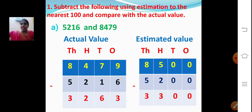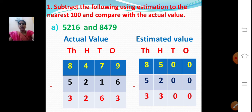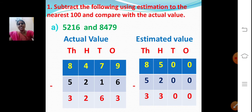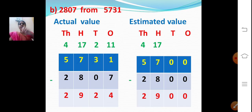So first what we have to do? Find out the actual value. Then round off the subtrahend and minuend to the nearest hundred and subtract to get the estimated value. Then compare — just round off the actual value to the nearest hundred. If you get the estimated value, the answer is correct.